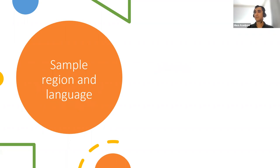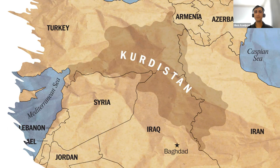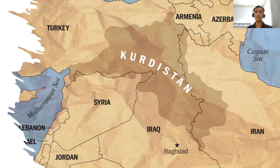The sample region and the languages. Our departure point would be Western Asia. The region includes Iran, Iraq, Syria, Turkey, Armenia, and Azerbaijan. As you see on this map, this is the area that I'm focusing on. More specifically, I'm going to highlight this area — a highlighted region quite obvious from the map, called Kurdistan. It is not an official region.